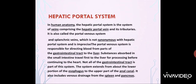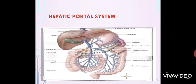Now, the hepatic portal system. In human anatomy, the hepatic portal system is the system of veins comprising the hepatic portal vein and its tributaries. It is also called the portal venous system. The portal venous system is responsible for directing blood from parts of the gastrointestinal tract to the liver. Substances absorbed in the small intestine travel first to the liver for processing before continuing to the heart. The system extends from the lower portion of the esophagus to the upper part of the anal canal, and also includes venous drainage from the spleen and pancreas.